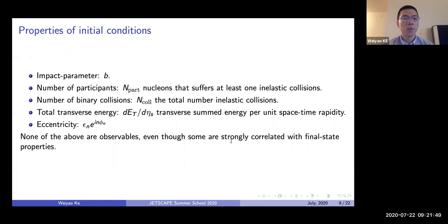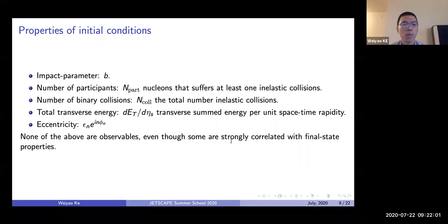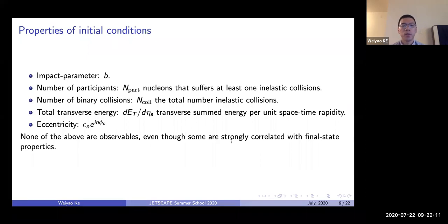For the event properties, there are numbers that summarize an event instead of looking at all the details of its geometry. For example, there is the impact parameter, the number of participants — where participants are those nucleons that participate in inelastic collisions — and the number of binary collisions, which is the total number of inelastic collisions. The number of binary collisions is interesting because we expect hard process production cross-sections to be proportional to the effective nuclear-nucleon binary collision number.